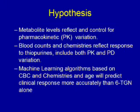Our hypotheses were: 1. Metabolite levels control for pharmacokinetic variation, but not pharmacodynamic variation. 2. Blood counts and chemistries reflect responses to thiopurines in the individual, and thereby capture both pharmacokinetic and pharmacodynamic variation. And 3. Machine learning algorithms based on the complete blood count and the comprehensive labs will predict clinical response more accurately than 6TGN alone.